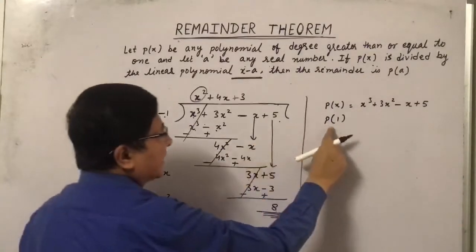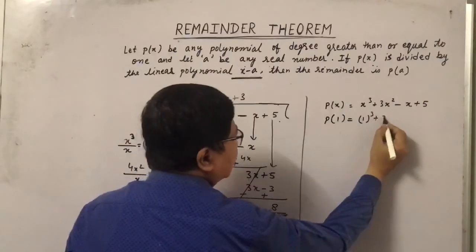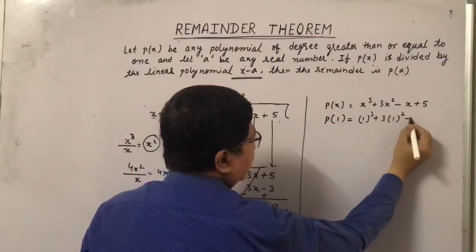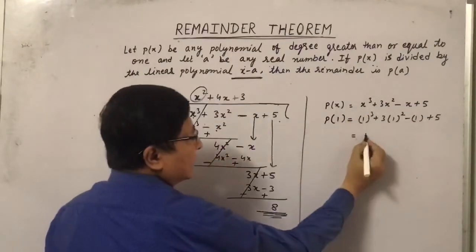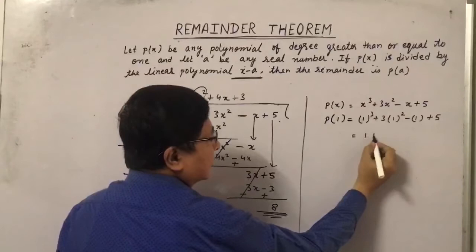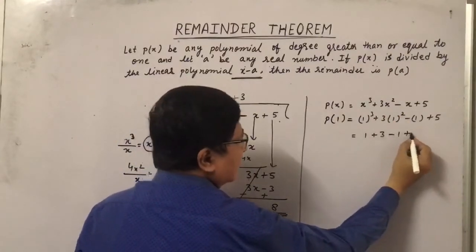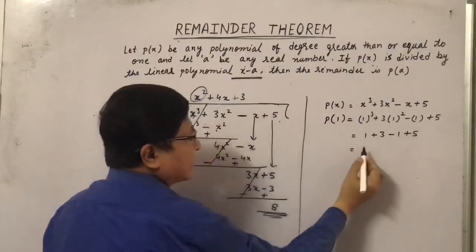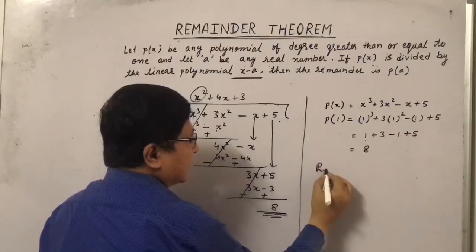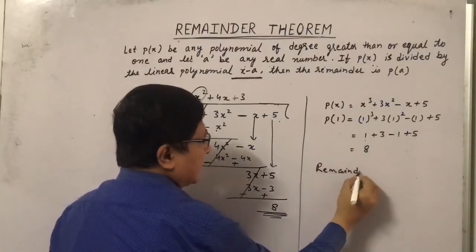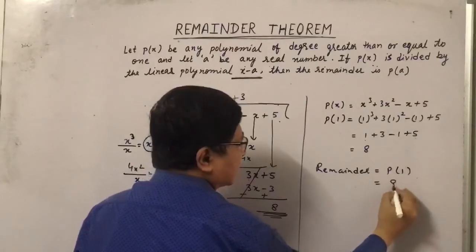Now let us put the value 1 here and just see what is the remainder. 1 cube plus 3 times 1 square minus 1 plus 5. Let us solve this. 1 cube is 1 and 1 square is 1, 3 times 1 is 3, minus 1 plus 5. When we solve this, 1 plus 3, 4 plus 5, 9, 9 minus 1 is 8. So the remainder P(1) is equal to 8.